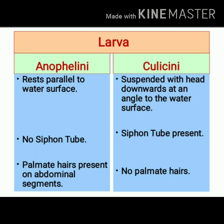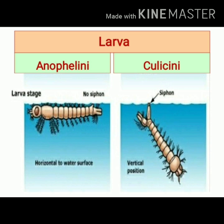Larvae of Anophiline mosquitoes rest parallel to the water surface. The siphon tube is absent, and the abdominal segment of these larvae shows presence of palmate hairs. Larvae of Culicine mosquitoes are suspended in the water with the head downwards at an angle to the water surface. In this image, you can note larvae of Anophiline mosquitoes resting parallel to the water surface, whereas larvae of Culicine mosquitoes are suspended with the head downward. You can also note the presence of a siphon tube in Culicine larvae.